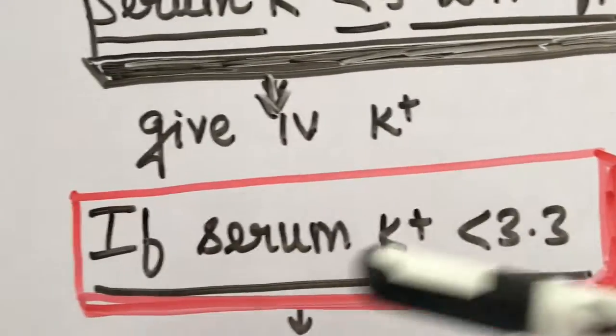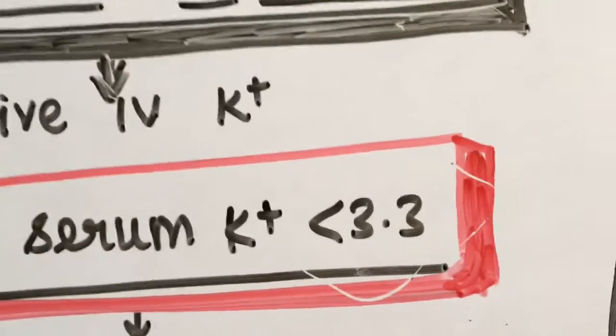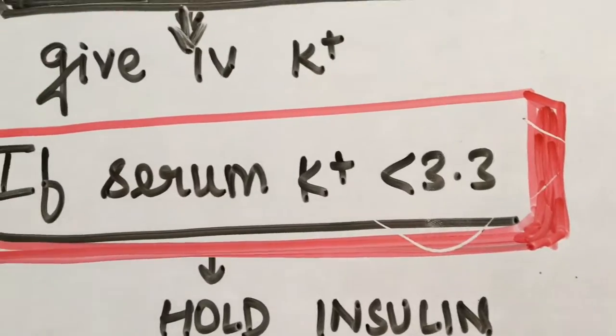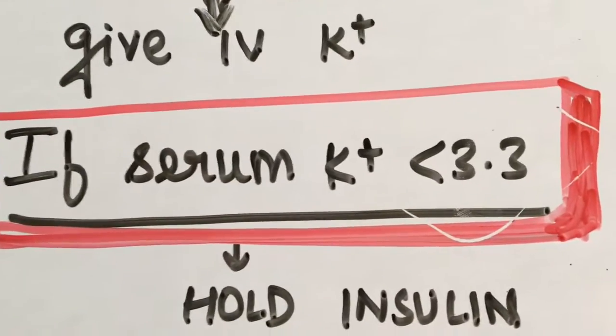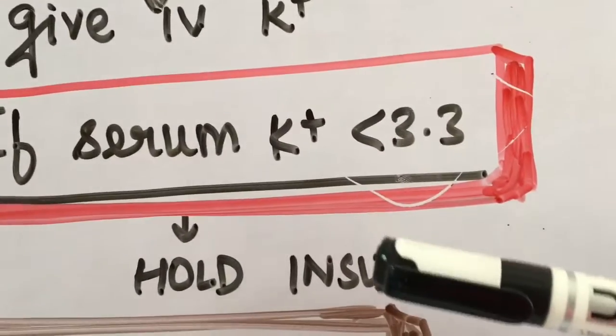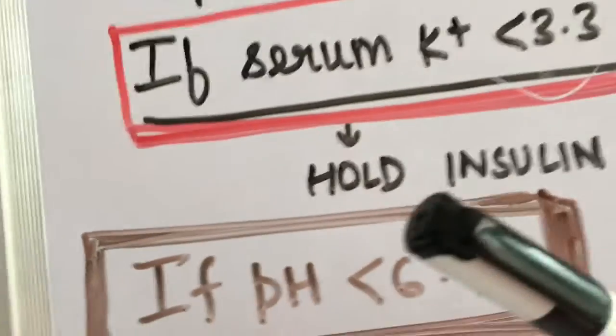Then what you have to do is you have to hold the insulin, because what insulin does is it pushes the potassium inside the cells, and the levels in the serum will drastically fall and it would lead to cardiovascular abnormalities like arrhythmias. So we have to prevent that thing.